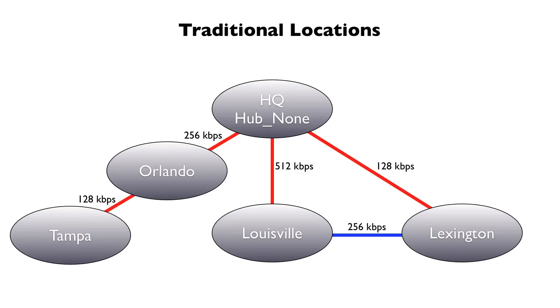The assumption with traditional locations was that we had a hub-and-spoke topology where every site had one connection that went right back to HQ. So for example, if we had a call going between Louisville and Lexington, there's a 256k link between those two sites, but locations would not know about that link. It only knew about the links going directly between HQ and the other sites, so this 256k link was totally ignored.